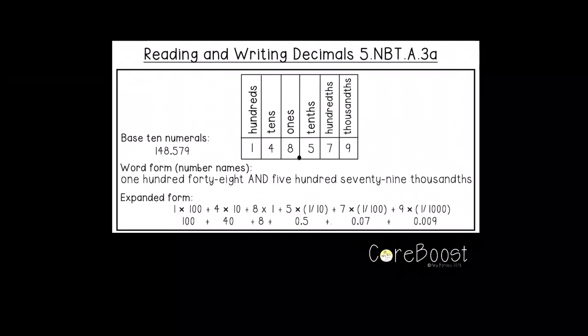So first we have base 10 numerals, and that is just your typical number with regular numerals. And then we have word form where we write it out in words: 148 and, that's where your decimal is, 579 thousandths.